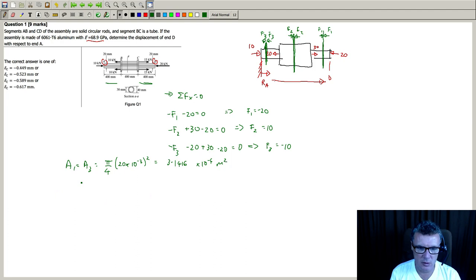And then for the larger tube in the middle - section rod, I should say - actually no, that's an assembly section here, so that's a tube. So we've got pi over 4, so I'm going to have the outer diameter, which is 40 times 10 to the minus 3 squared, take away the inner diameter squared, so that's 30 times 10 to the minus 3 squared. And I got that to be 5.4978 times 10 to the minus 4 meters squared.